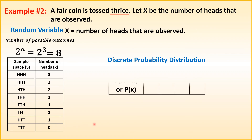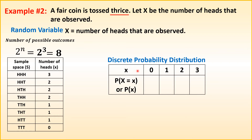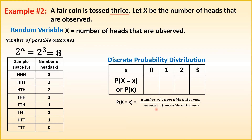X takes values 0, 1, 2, 3. Even though 1 appears three times and 2 appears three times in the outcomes, we represent each value only once in the table. To find P(X), we use: number of favorable outcomes over number of possible outcomes. For X=0: 1 favorable outcome, so P(X=0) = 1/8. For X=1: 3 favorable outcomes, so P(X=1) = 3/8.